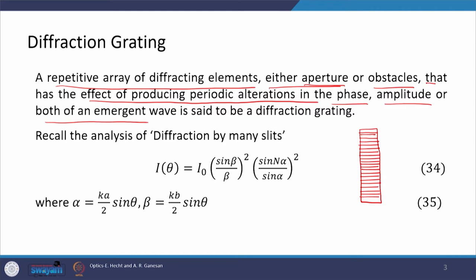Here you see that the red lines represent the closed portion, while the separation between the two red lines — the white background — represents the open portion. If you shine a plane wave on this arrangement, the portion of the wave falling on the opaque or closed part will not pass, while the portion falling on the open or transparent part will be allowed to pass. Such an arrangement is called a grating.